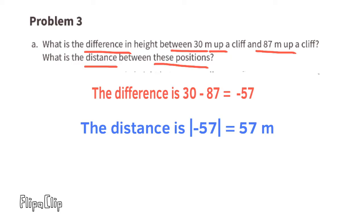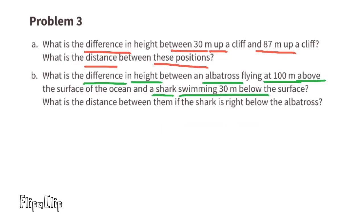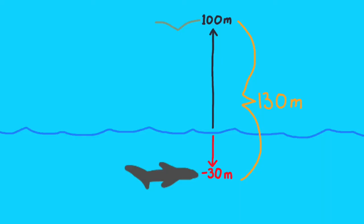The distance between these two positions is 57 meters, because the absolute value of negative 57 is 57. Part b: what is the difference in height between an albatross flying at 100 meters above the surface of the ocean and a shark swimming 30 meters below the surface? What is the distance between them if the shark is right below the albatross?